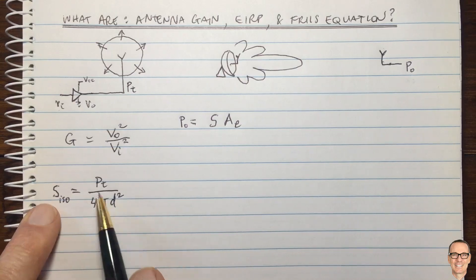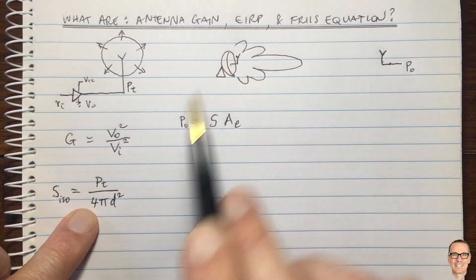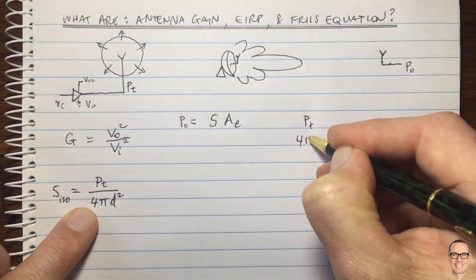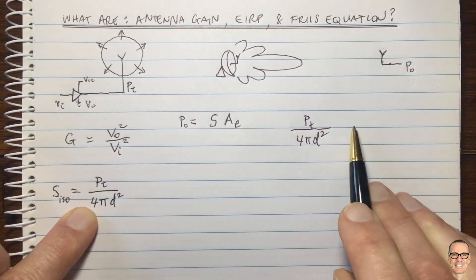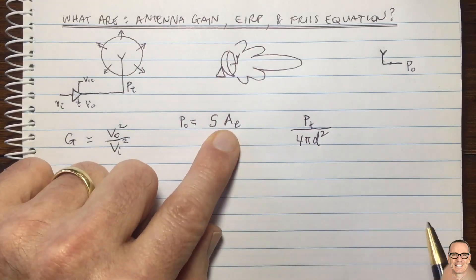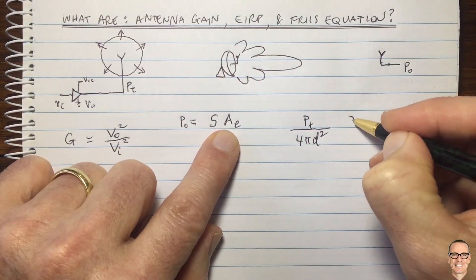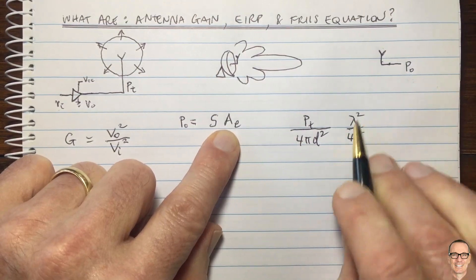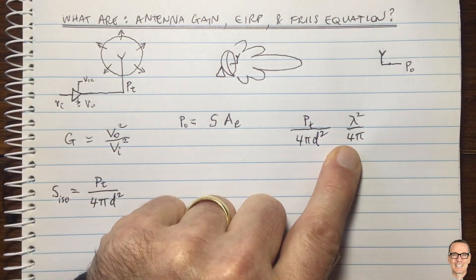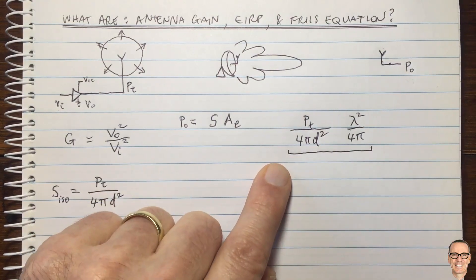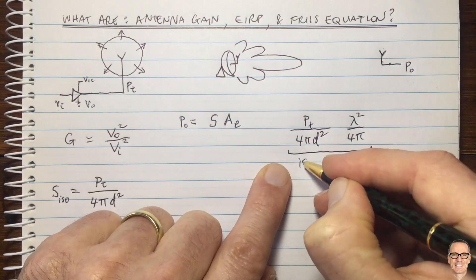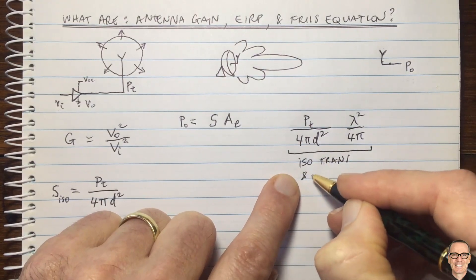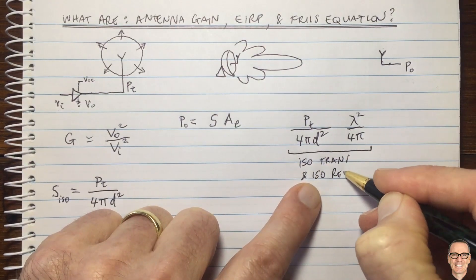For an isotropic transmitter, the power density is PT / (4πd²). We multiply this by the effective area of an isotropic receiver, which is given by λ² / (4π) — you can find the derivation for that elsewhere. This gives us the power received with an isotropic transmitter and an isotropic receiver separated by distance d.